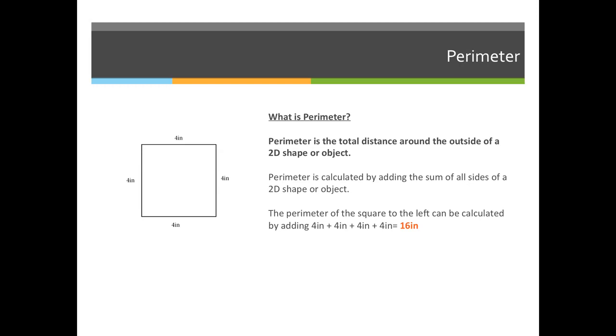When you estimate pricing of a die, you need to figure out how many inches of metal it will take, and then you multiply it by a per inch metal price. So we're going to start off with perimeter.